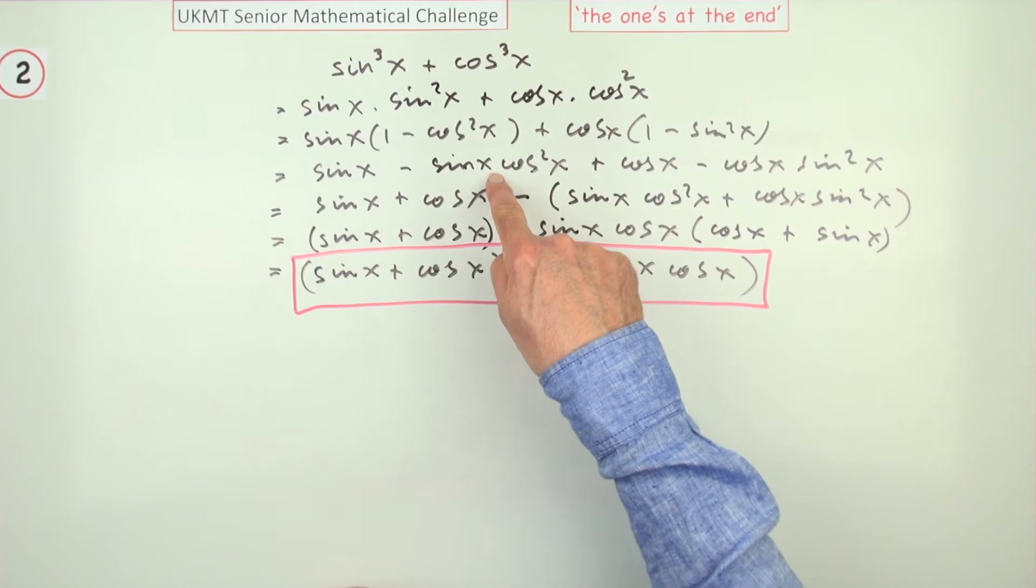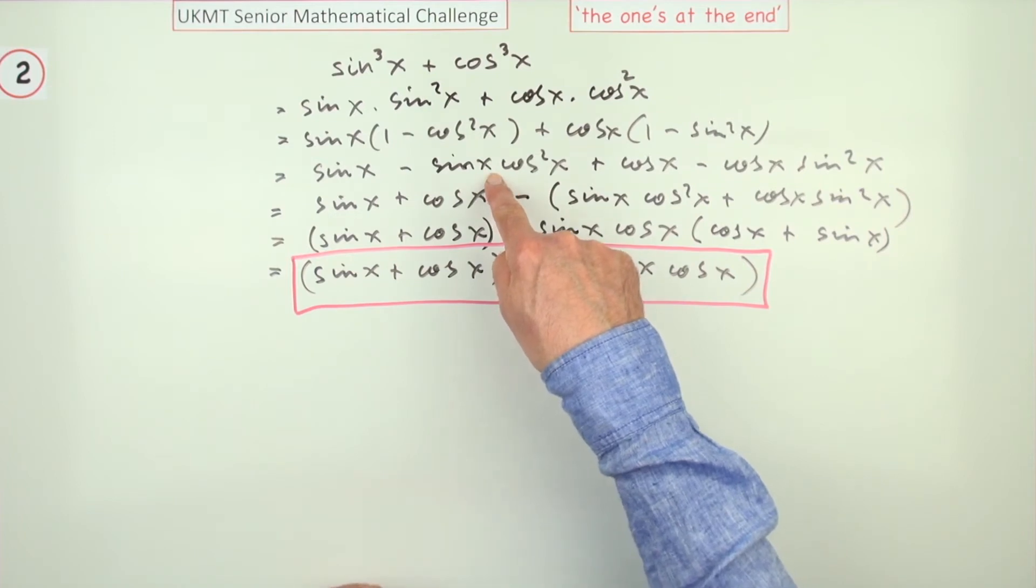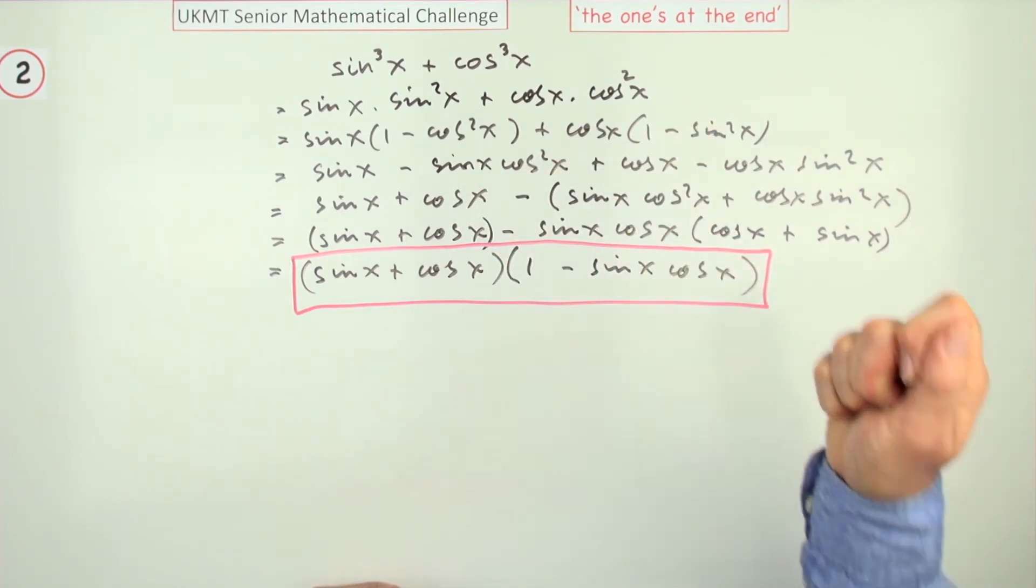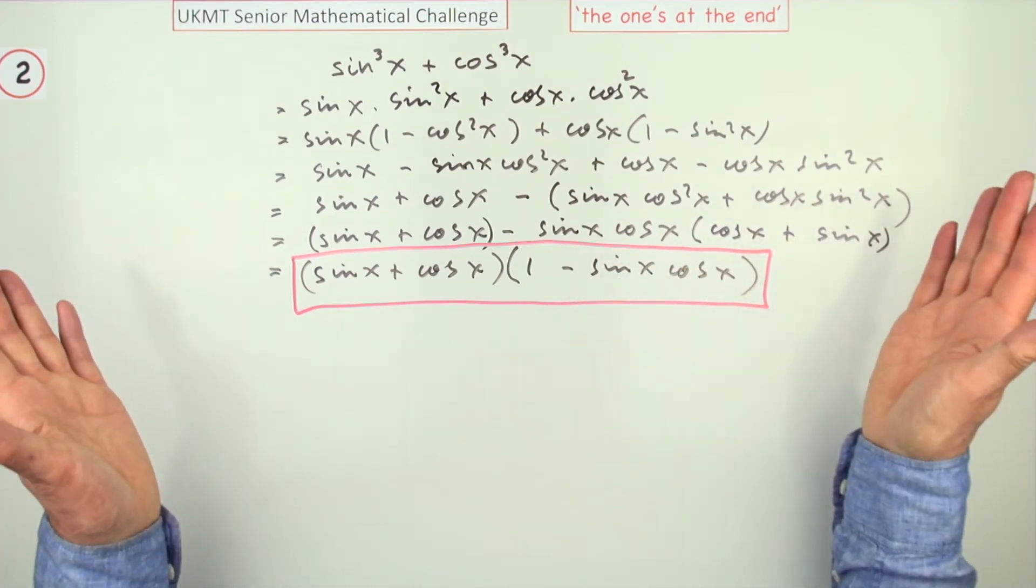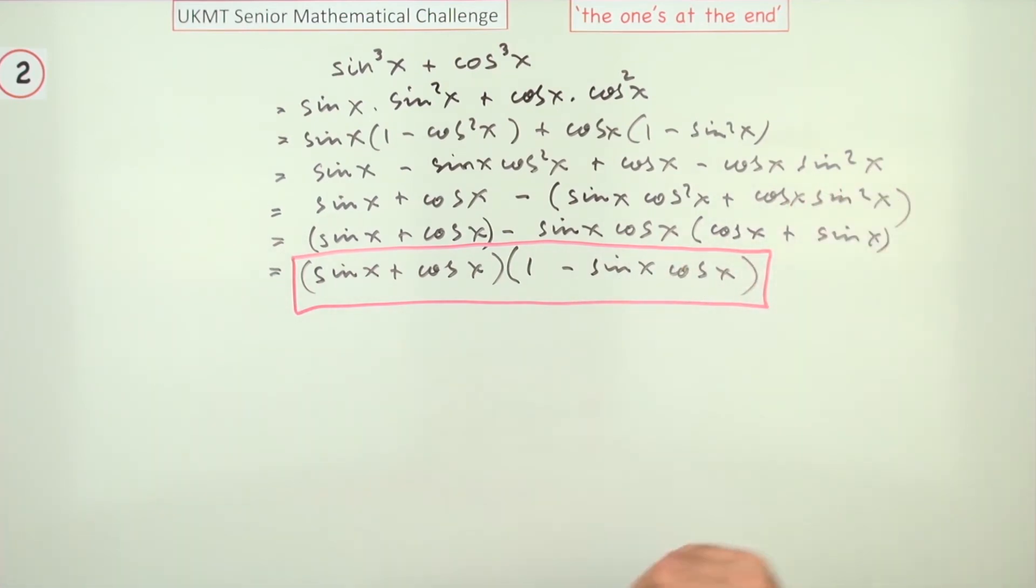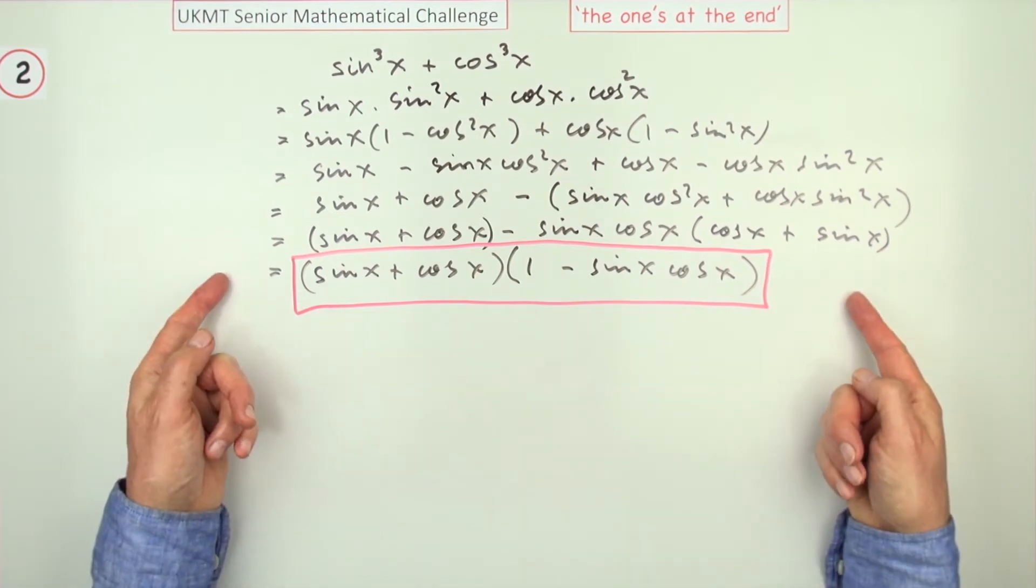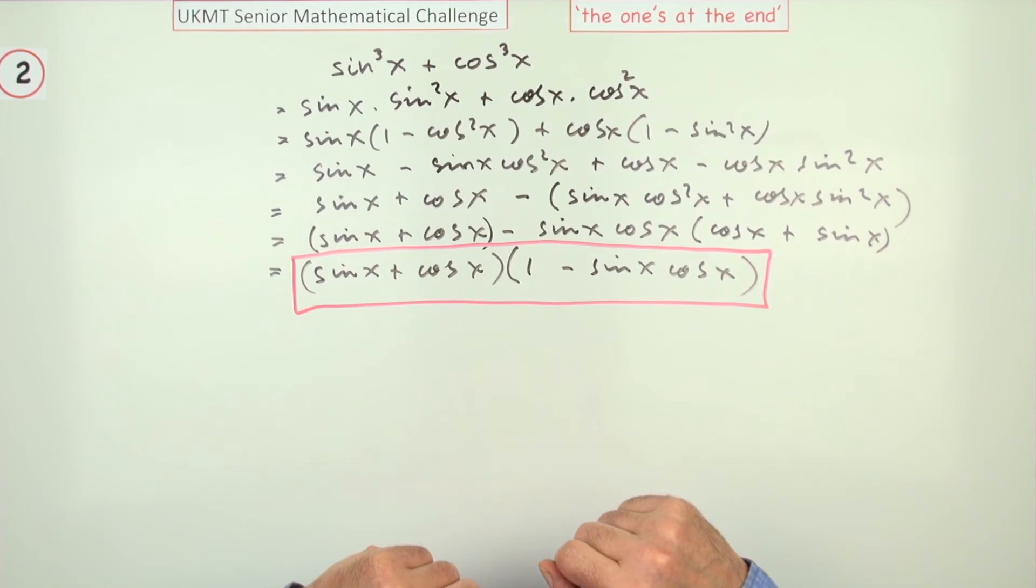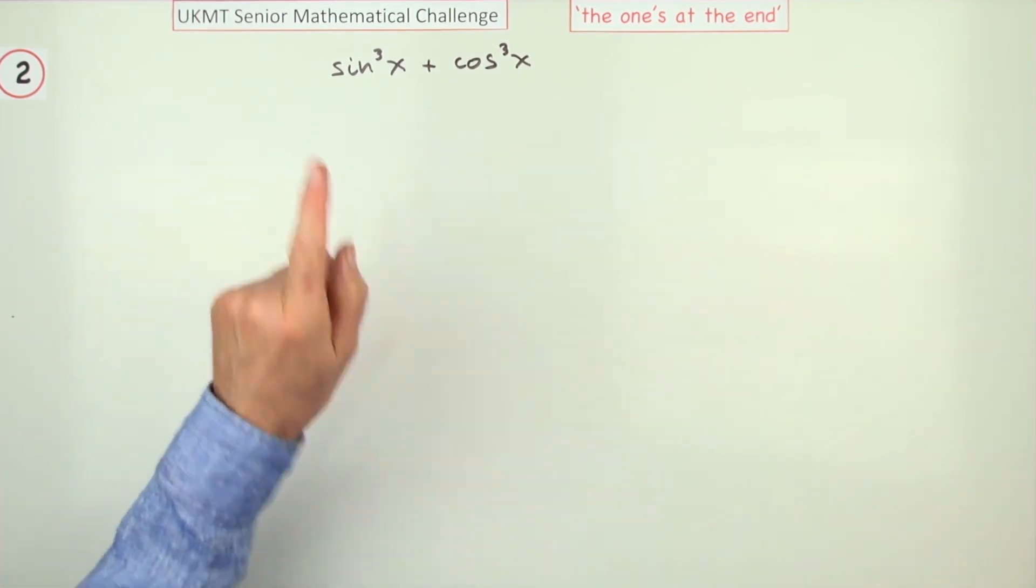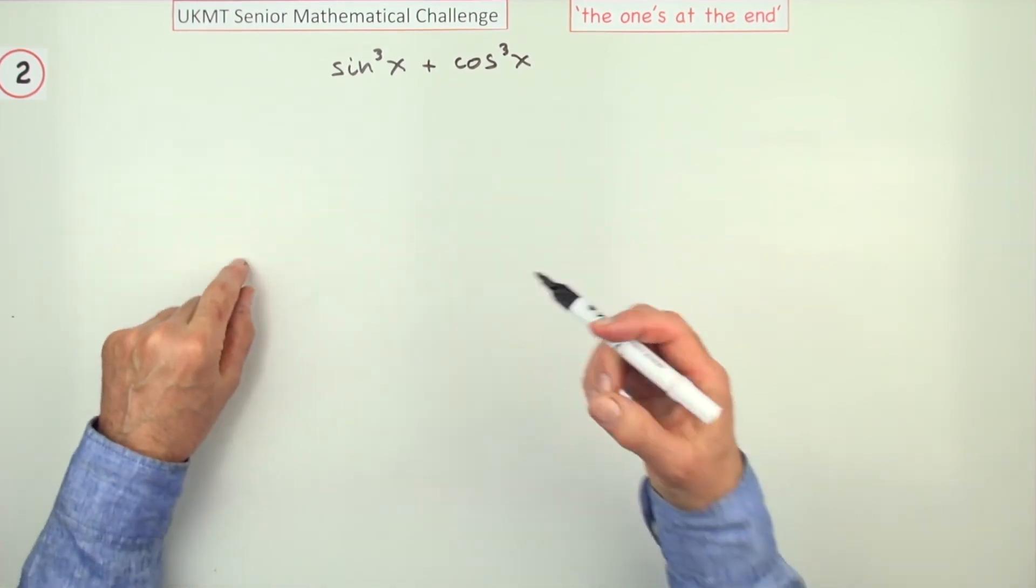Now you probably had your sine double angle sword half drawn and ready to use there. So you could have changed this expression if necessary, but it wasn't needed so put it away. Okay, it took a bit of time but probably still within the limit, but there is a quicker way.